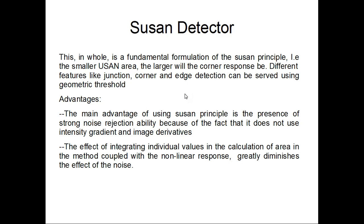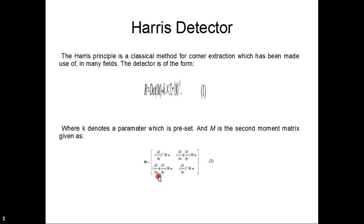There are certain advantages to using the Susan detector. The main advantage being the presence of strong noise detection ability because of the fact that it does not use intensity gradient and image derivatives. The effect of integrating individual values in the calculation of area in the method coupled with the non-linear response greatly diminishes the effect of the noise.